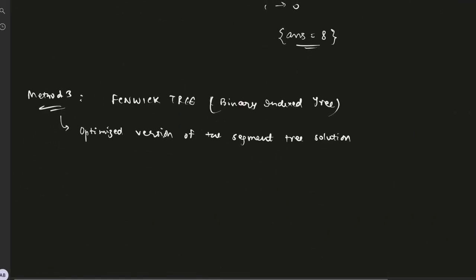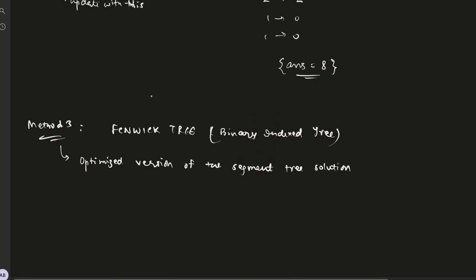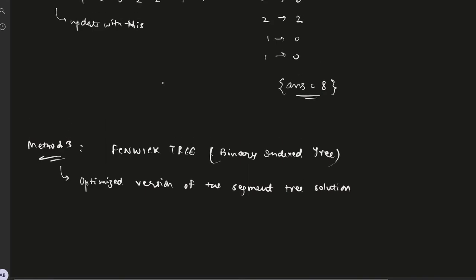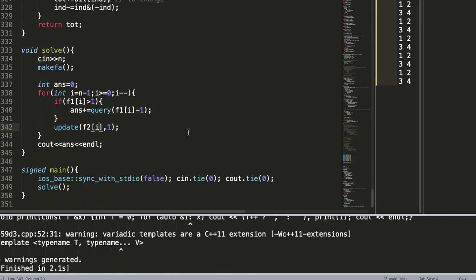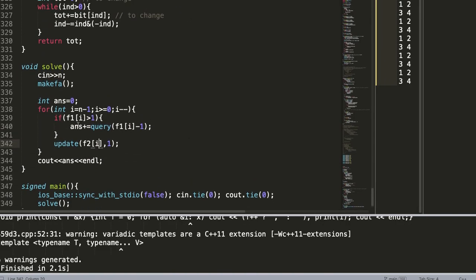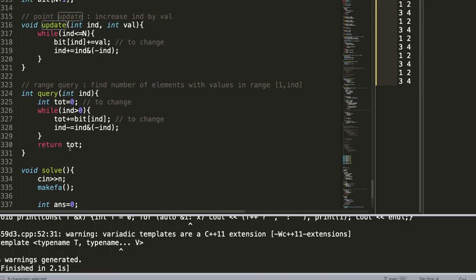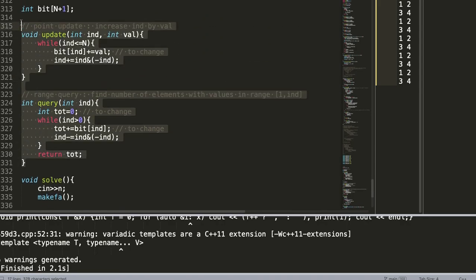Now the third approach is a Fenwick tree. Fenwick tree is nothing but - I mean it's just a more optimized - the code is more optimized in Fenwick tree as compared to the segment tree solution. The code is pretty much similar, everything is similar. Instead of - just the query and update functions differ here. And this is the standard Fenwick tree. Is good, thank you.